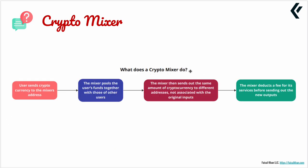So what does a crypto mixer do? A user sends cryptocurrency to the mixer's address. The mixer pools the user's funds together with that of others. The mixer then sends out the same amount of cryptocurrency to different addresses not associated with the original input, deducting a fee for its services. In some cases, the mixer breaks the amount — it will total the same amount but can split it and send it across multiple addresses.